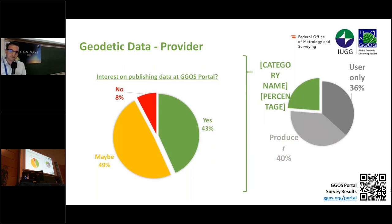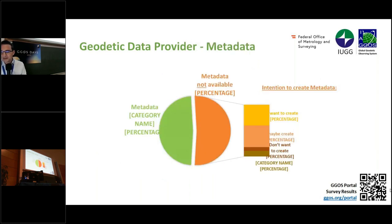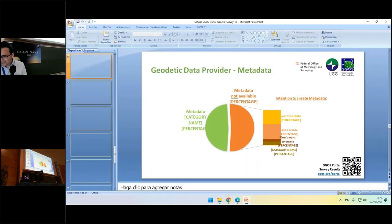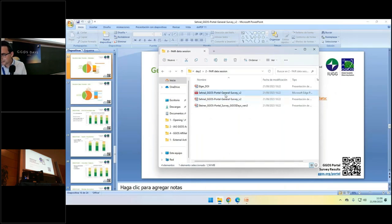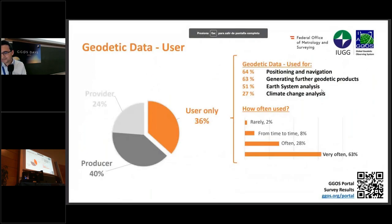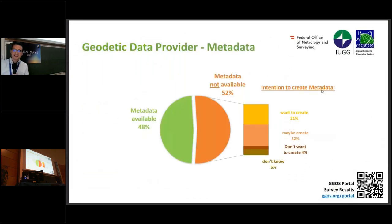From the provider side, the most important question for the JIGOS portal was whether providers are interested in publishing their data there. 43 said yes and 49 said maybe, so the majority wants to participate. On the metadata side, we also asked whether metadata is already available for their data and products: 48% said yes and 52% said no, but those who said no want to create it in the future. So there is high interest in providing this metadata.